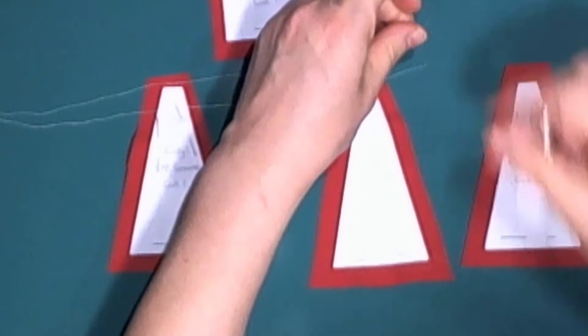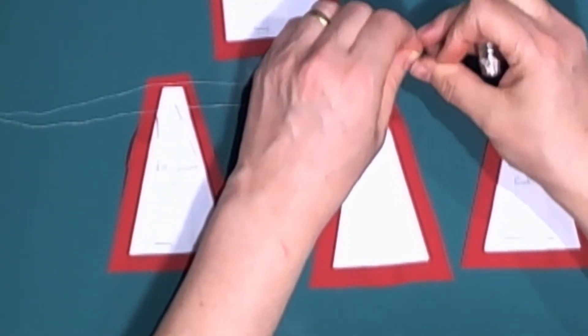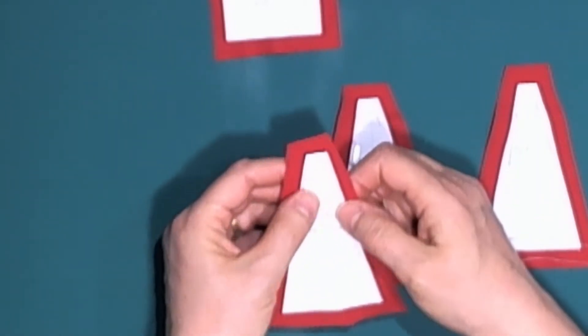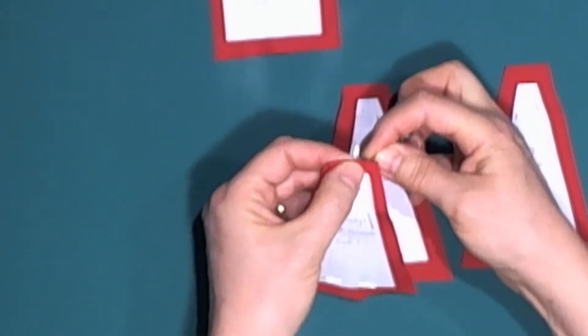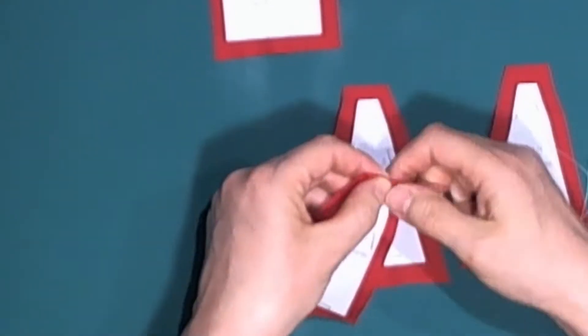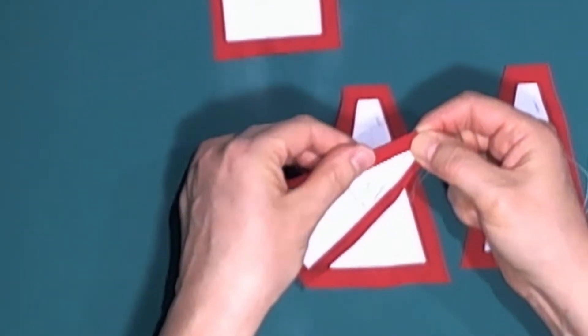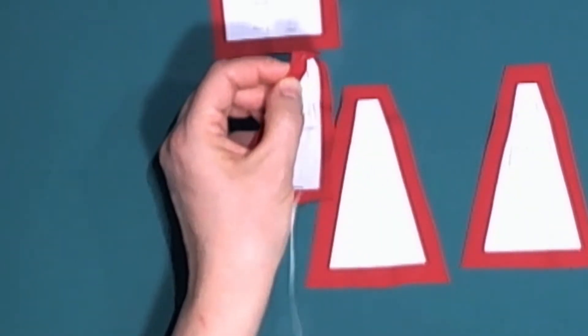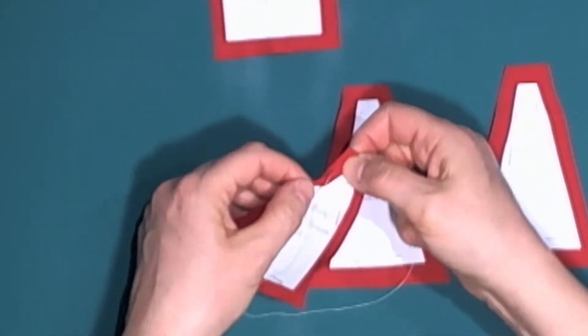Using a strong needle, thread it with a contrasting cotton. Fold the top small edge down first, then fold over one side and secure with tacking stitches. Work to halfway down the side.